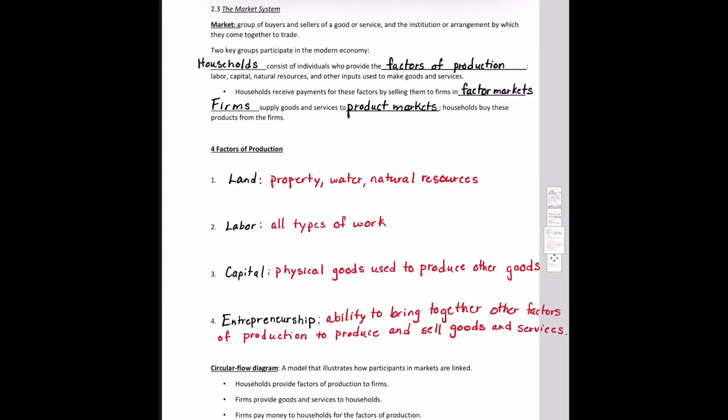We've already defined what a market is, but we have two main groups in the modern economy: households and firms. Households are the individuals that provide factors of production, while firms supply goods and services to the product markets. Households receive payments for the factors of production by selling them to firms in the factor markets, and households buy products from firms in the product market. The factors of production we're talking about are land, labor, capital, and entrepreneurship.